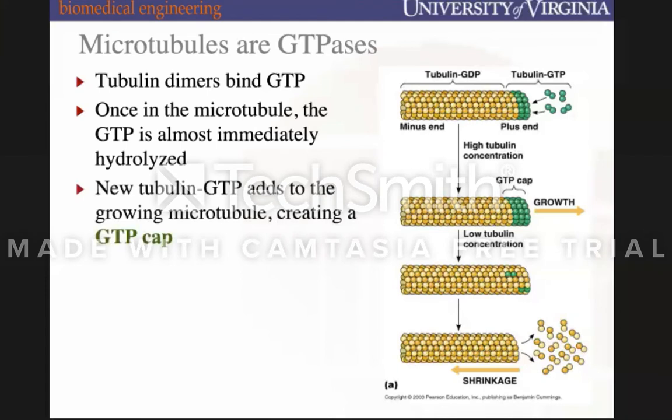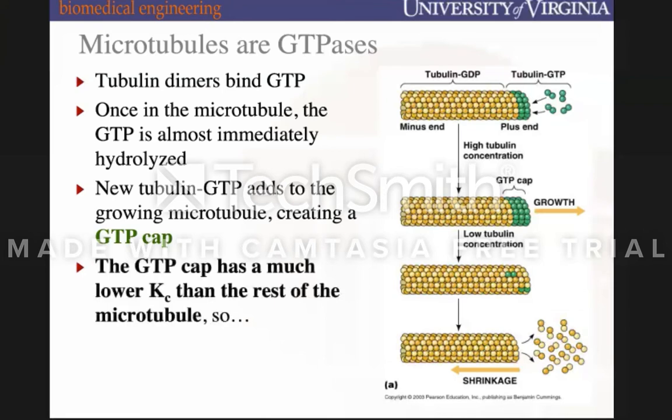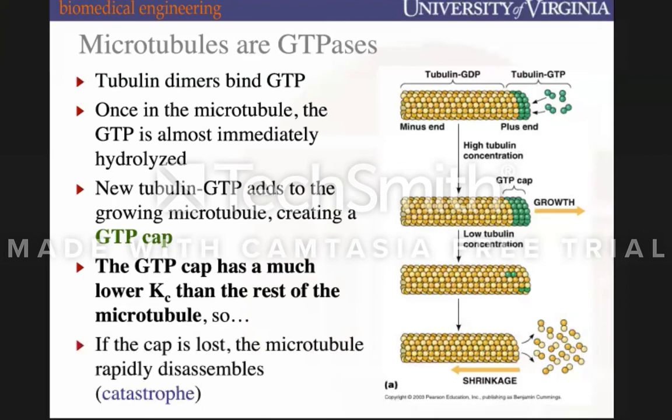Once it's in the microtubule, the GTP is almost immediately hydrolyzed, but the GTP cap changes the critical concentration to facilitate more binding. New tubulin-GTP binding creates a GTP cap, which has a much lower critical concentration. Once the reaction turns GTP to GDP, you lose that advantage of the lower critical concentration, and it leads to disassembly.